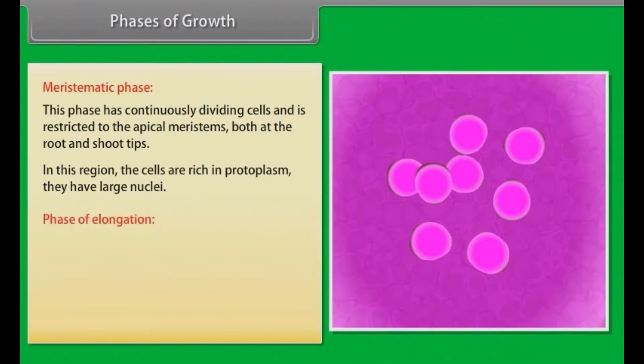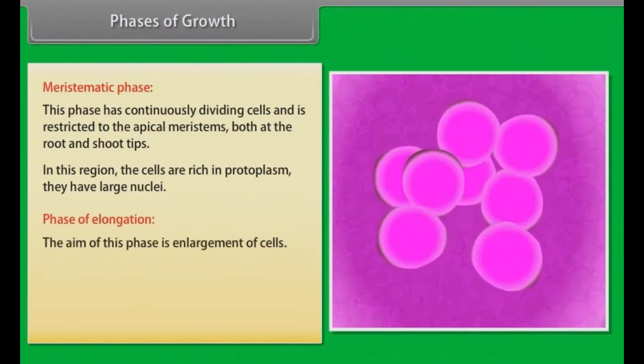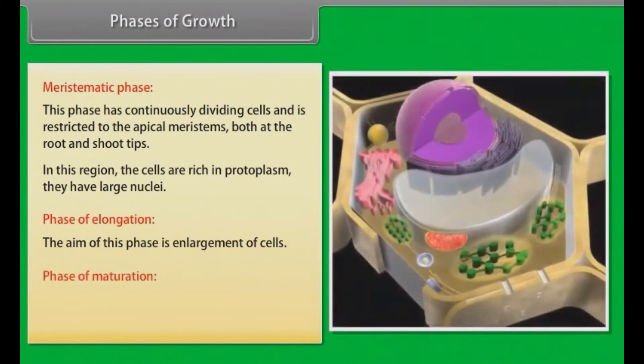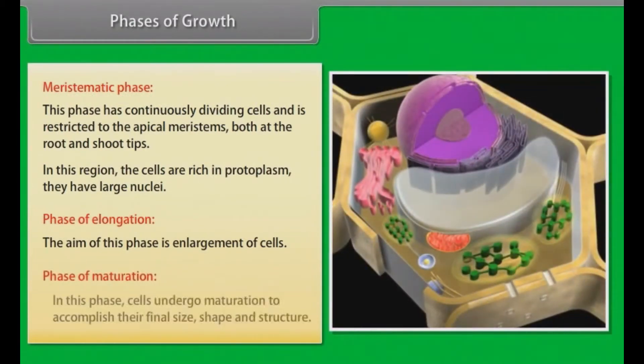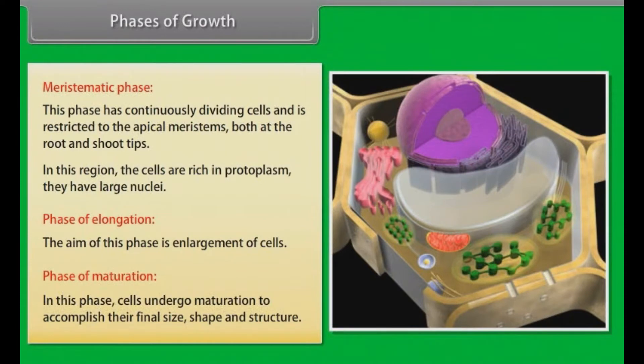Phase of elongation: The aim of this phase is enlargement of cells. Phase of maturation: In this phase, cells undergo maturation to accomplish their final size, shape and structure.